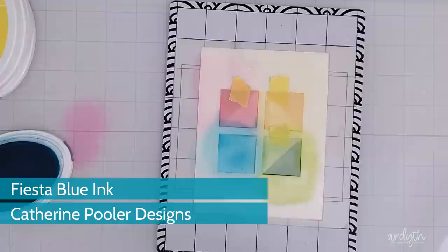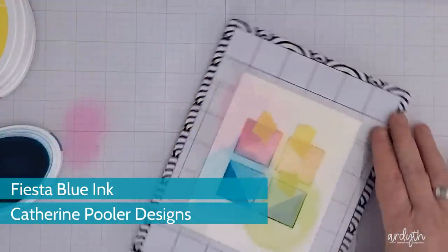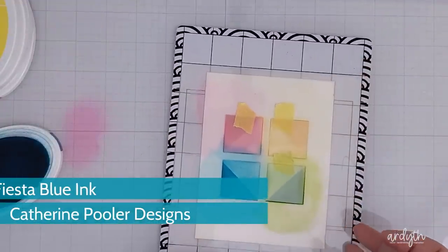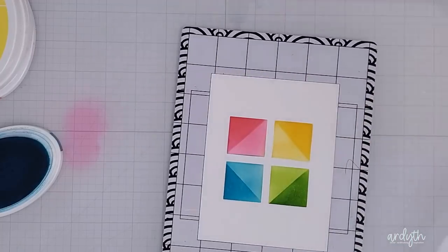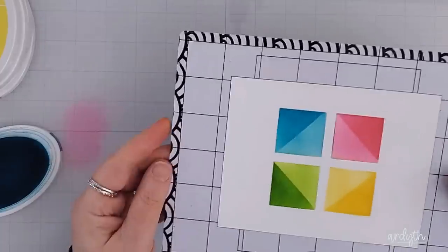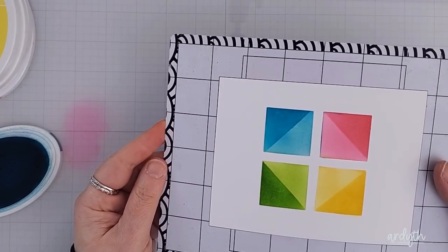Finally for that fourth corner I used Fiesta Blue ink. When I removed the stencil I could see that the squares were not 100% perfect masks and there is a tiny bit of blue in my pink, so next time I would either tape off the edges or just be a little more careful with my ink blending.